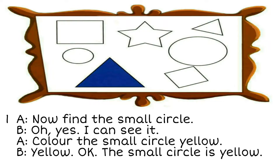One. Now find the small circle. Yes, I can see it. Colour the small circle yellow. Yellow. OK. The small circle is yellow.